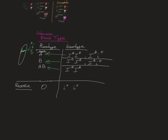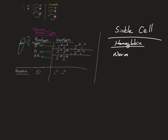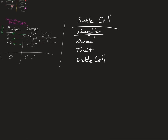That's codominance — blood type covers both codominance and recessive inheritance. This activity is great because you're forced to use both. Then on top of that you look at sickle cell. When we look at sickle cell you don't have capital and lowercase; you have normal hemoglobin, hemoglobin with the trait, and sickle cell.